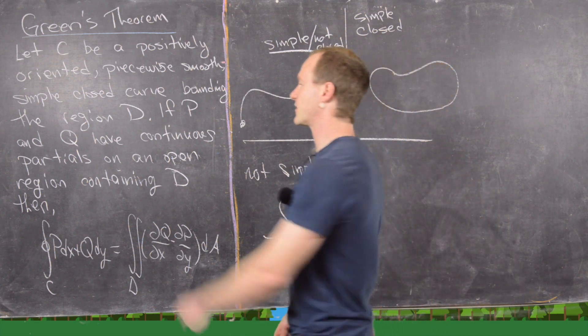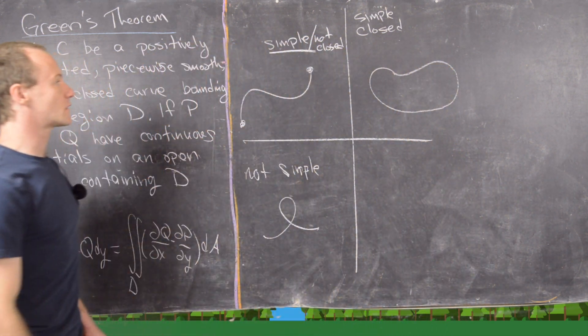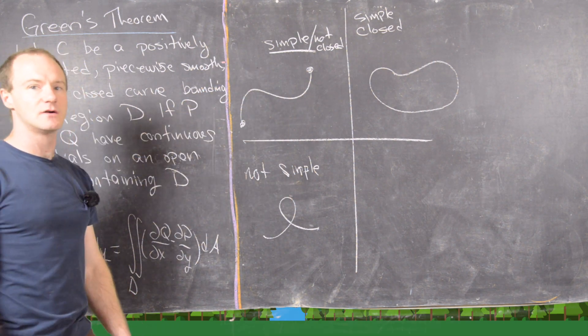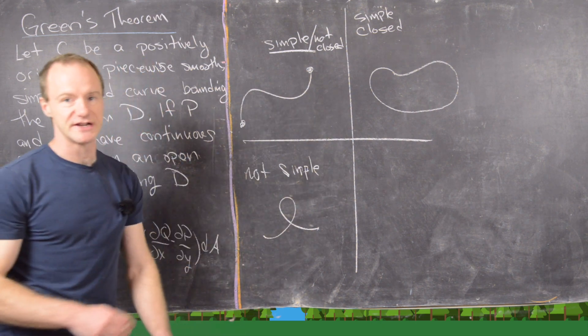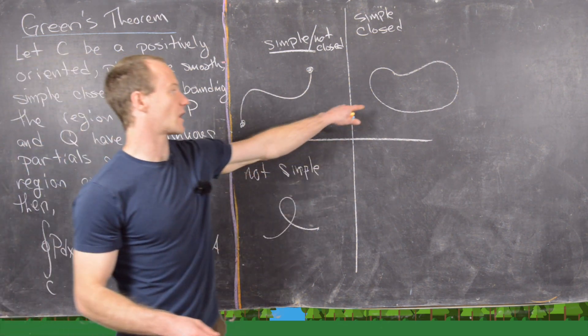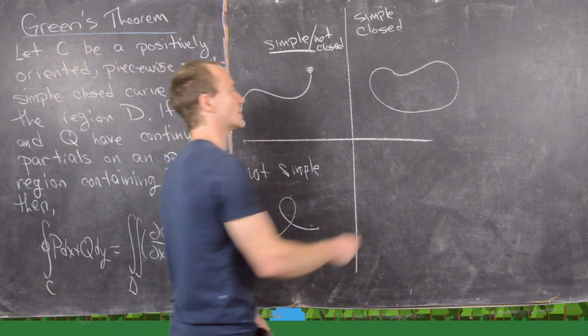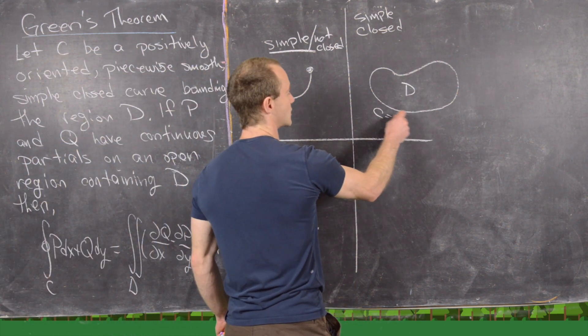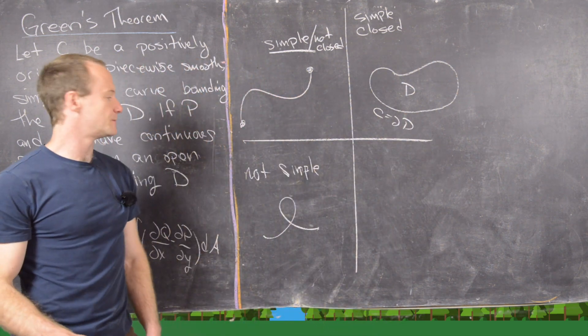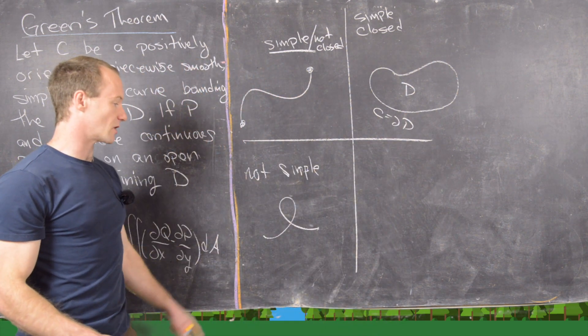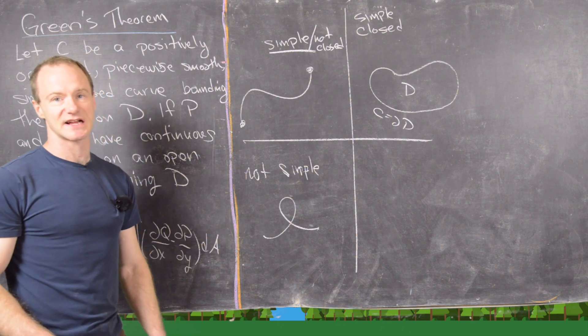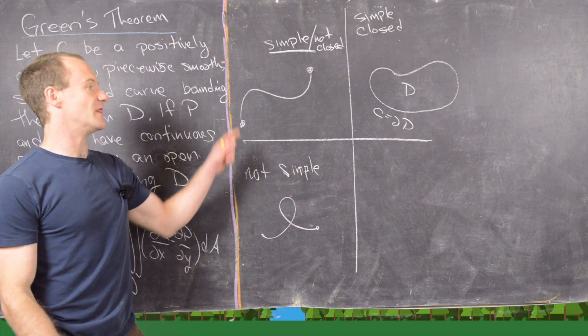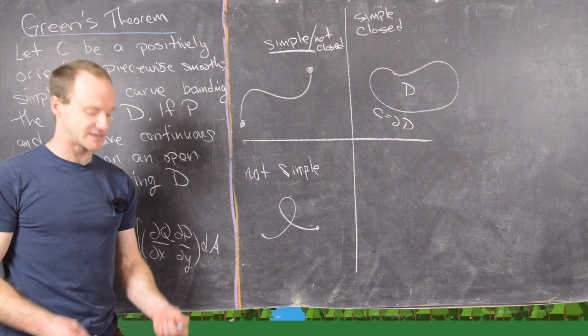So some of the terms in this statement are simple closed curve. So this is a curve that's simple that's not closed. Notice it does not bound a region. That's the hallmark of a closed curve. So notice this curve bounds a region in the middle of it, which we would maybe call D. And sometimes C is called del D, the boundary of D. This is not a simple curve. Notice it's self-intersecting on itself away from its endpoints.